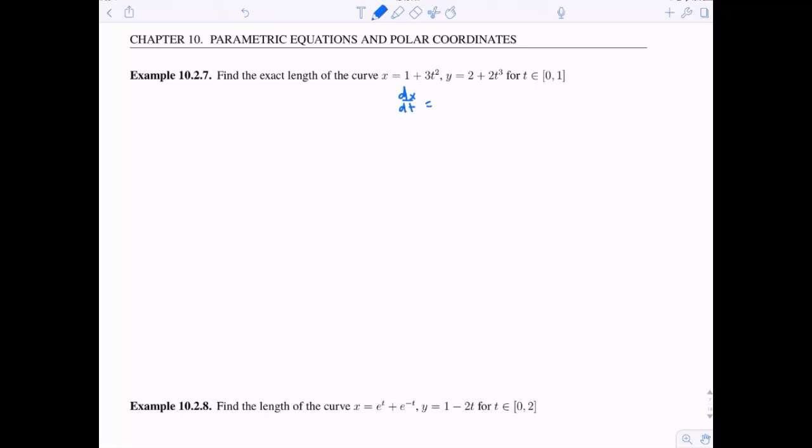So again, I'm going to calculate out dx dt and dy dt because I know I'm going to need these things here in just a second. So I get 6t and 6t squared.